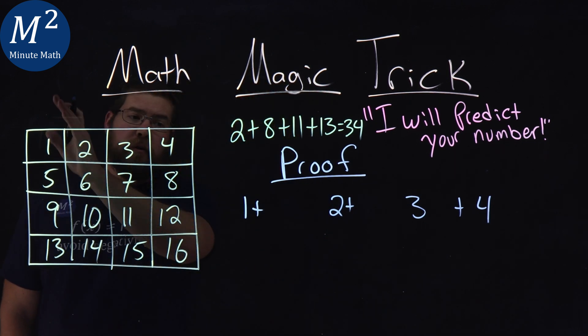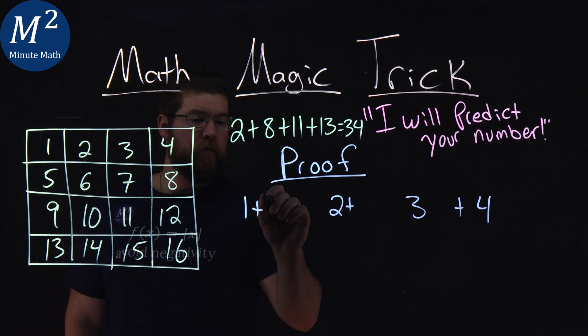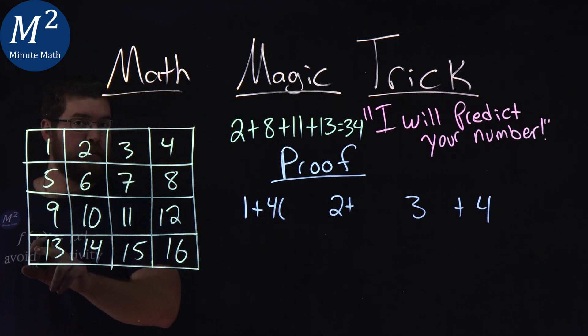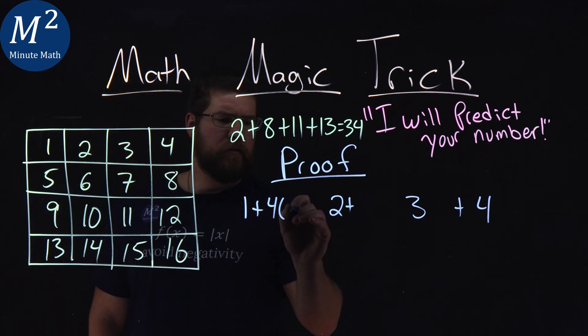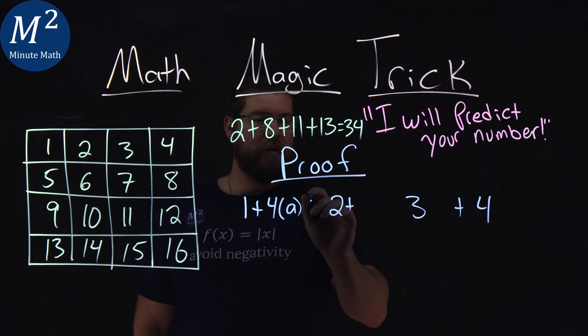The value we could pick from column one can be one plus four times how many numbers we're going down. We don't really know how many we're going to pick yet, so let's give it the variable a. The same thing happens—plus two plus four times.